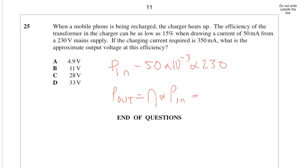Power in is 50 times 10 to the minus 3 times 230. Power out is going to be the efficiency times by the power in. 50 times 10 to the minus 3 times 230 times 0.15 gives you 1.725. Power is IV, so let's divide that by the current, divide by 350 times 10 to the minus 3, giving you a voltage of 4.9 volts when rounded, which is answer A.